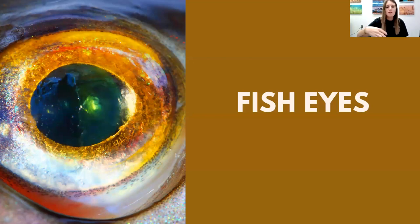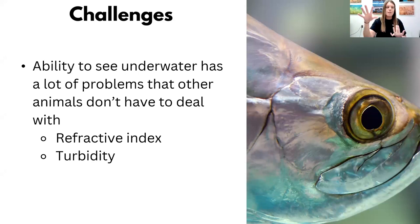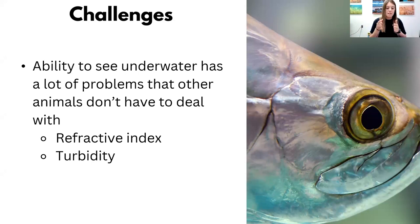Now let's move to fish. A lot of people don't think of fish eyes as anything special, but they have a lot of challenges other animals don't have to worry about. When you're in the water, it's not always clear. There's a lot of light reflecting on things. At the bottom of a lake or ocean, light doesn't even get there — so how do you see? The two biggest problems fish face are the refractive index — the speed of light traveling through a material when it's not a vacuum — and the turbidity of the water. The higher the turbidity, the less light reaches the bottom.